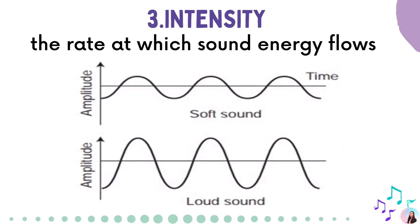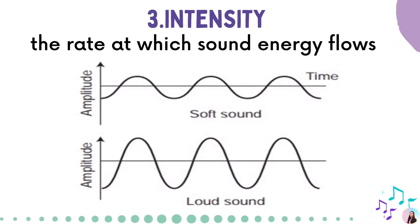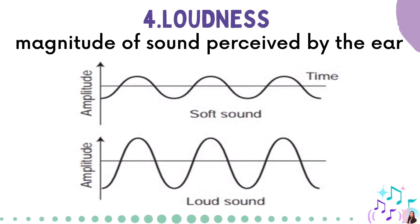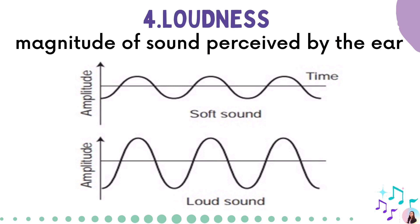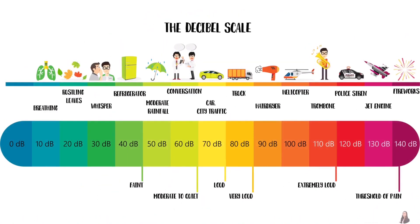Intensity is the rate at which sound energy flows through a unit area, while loudness is the magnitude of the sound perceived by the ear. As you can see, the greater the amplitude, the louder the sound is — thus more energy is needed for a louder sound. In general, the more intense the sound, the louder it seems. The loudness of sound is measured in volume, and to quantify volume we use decibels.